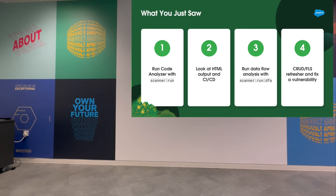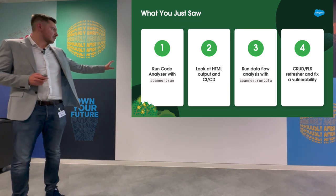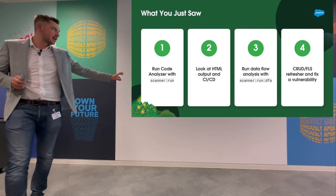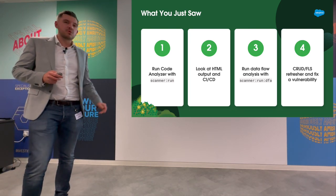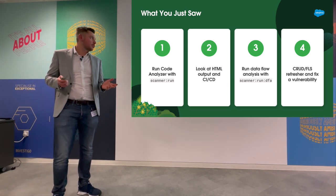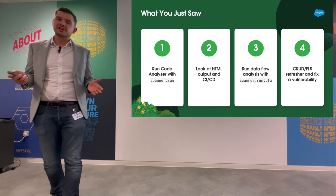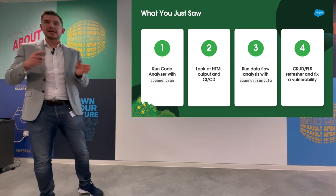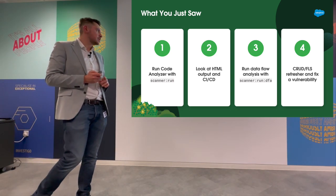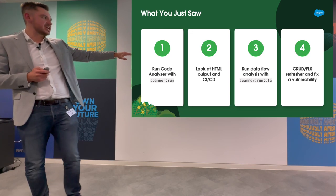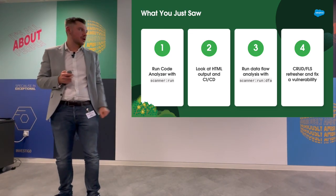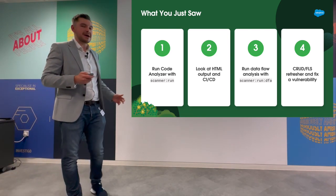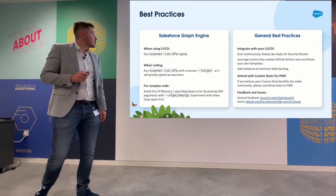Let's do a quick recap of what we've covered. We ran Salesforce Code Analyzer using static code analysis with `scanner run`, looked at HTML output great for developers to assess violations, and also talked about using JUnit XML to output results for interpretation by CICD tools. We ran data flow analysis with `scanner run DFA` using Salesforce Graph Engine, did a refresher on CRUD and FLS checks, and fixed a vulnerability.